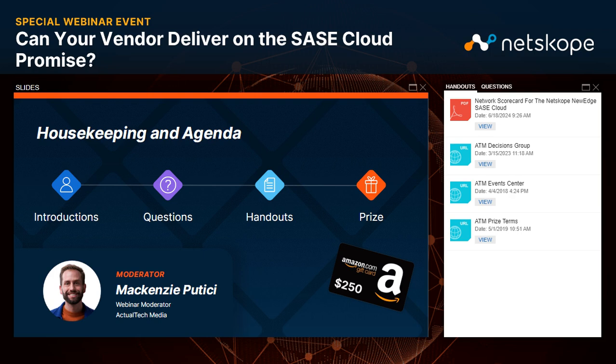The last thing I want to point out on your audience console is the handouts tab. You will see there is an awesome handout from Netscope — a PDF, the network scorecard for the Netscope NewEdge SASE Cloud. It has an attached report and is a resource you will certainly want to hold on to after today's webinar. We also have a $250 Amazon gift card as a prize drawing at the end. You must be in attendance during the live event to qualify, and all winners must meet the Actual Tech Media prize terms and conditions, linked in the handouts tab as well.